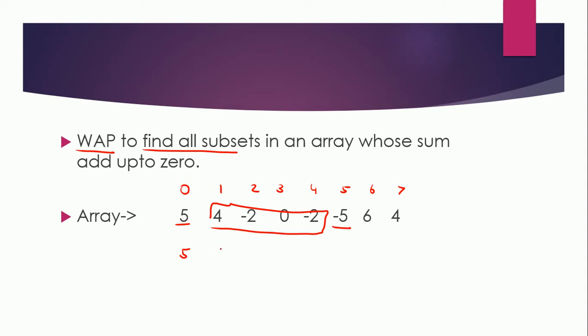So what we can do in this case is we need to maintain a running sum. Let's say five is there, here it would be nine, here it would be seven, here again it would become five, here it will become zero, and here it will become six, and here it will become ten.